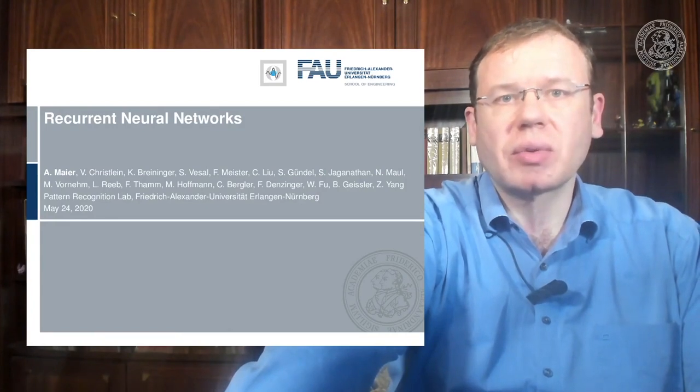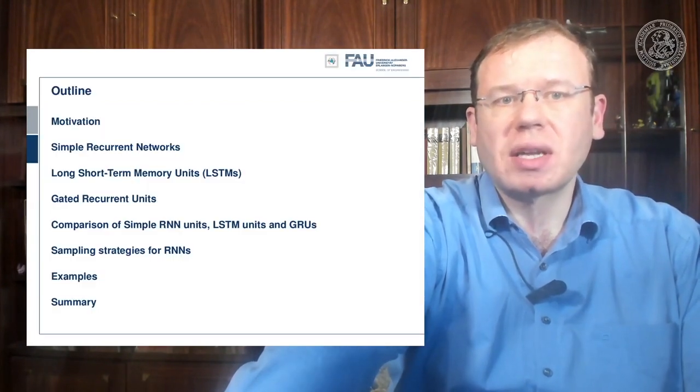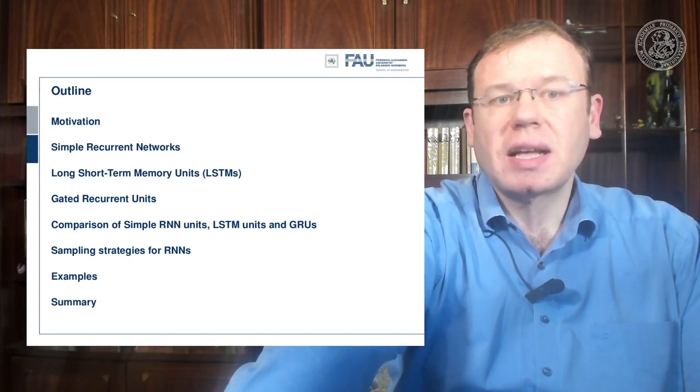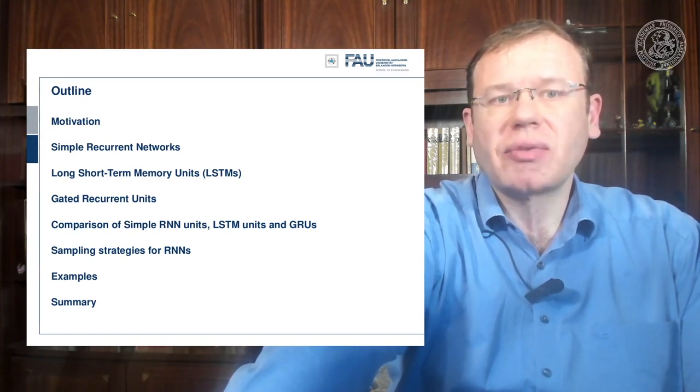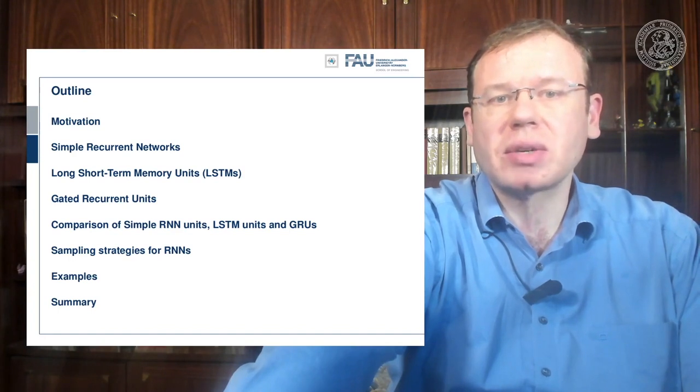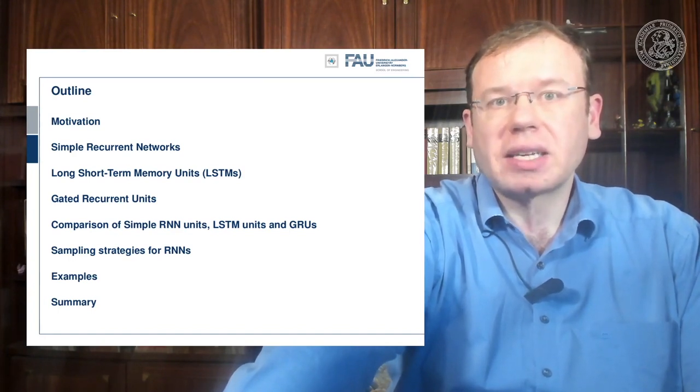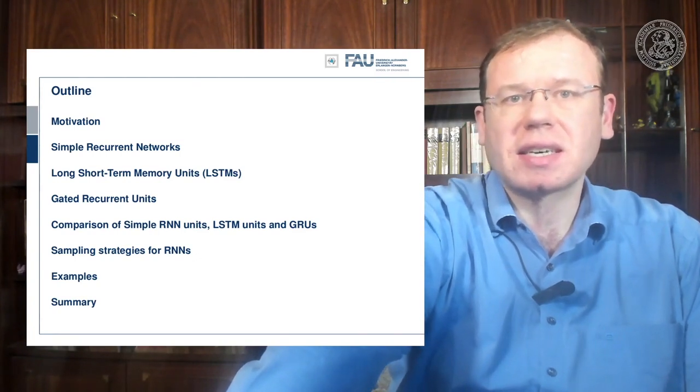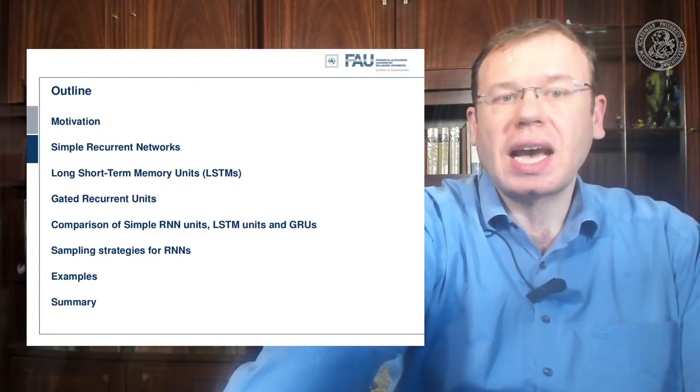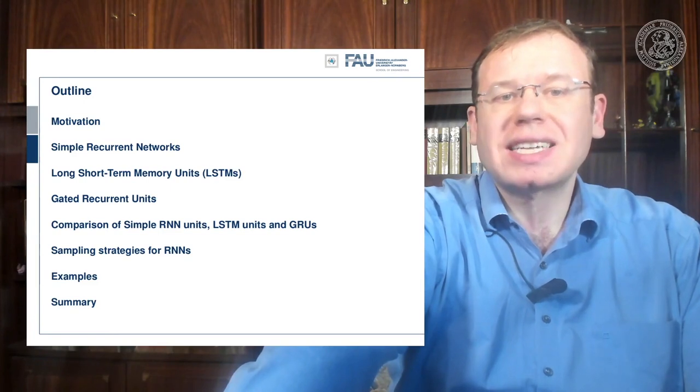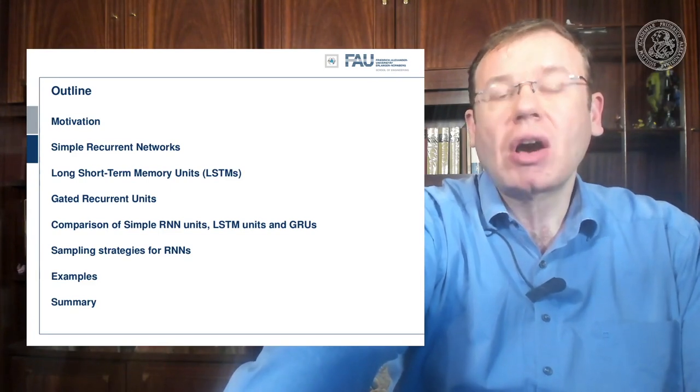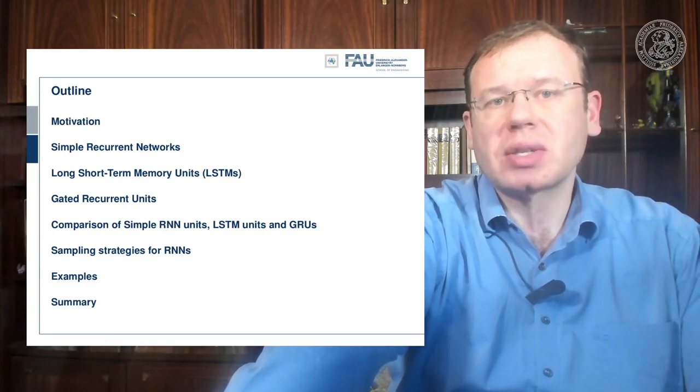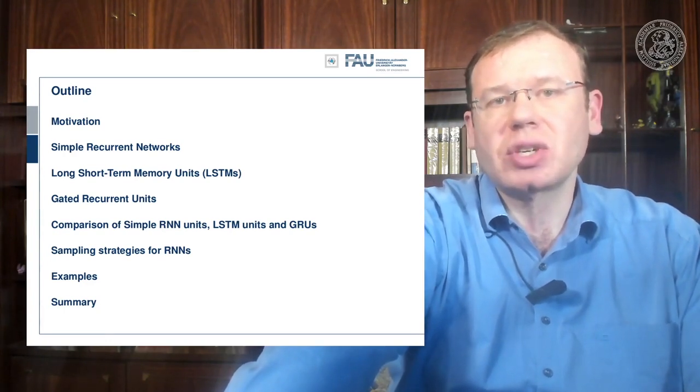So after a first review of the motivation, we'll go ahead and look into simple recurrent neural networks. Then we'll introduce the famous long short-term memory units followed by gated recurrent units. Then we will compare these different techniques and discuss a bit the pros and cons. And finally we'll talk about sampling strategies for RNNs. Of course, this is way too much for a single video, so we will talk about the different topics in individual short videos.